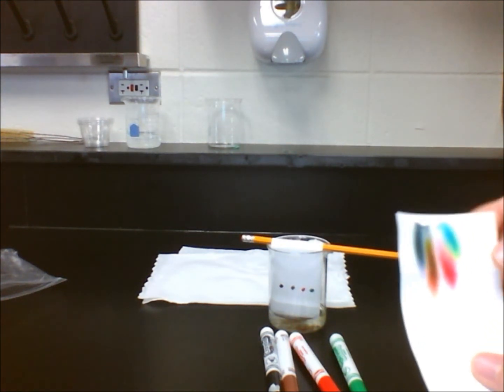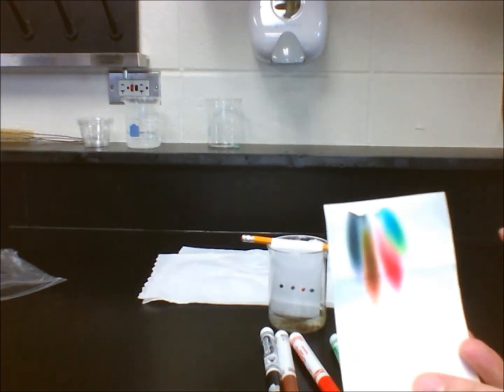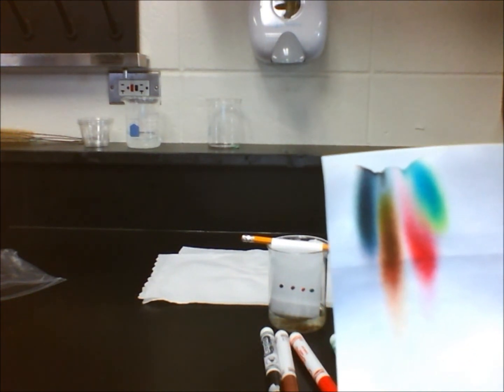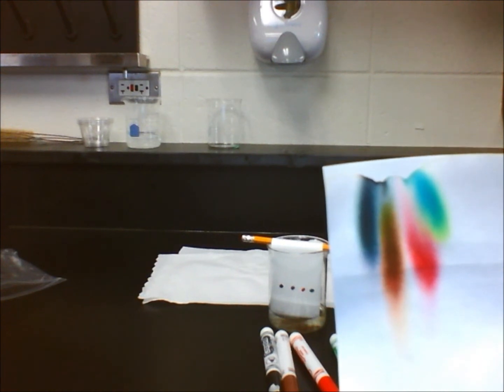The brown ink is composed of several different solutes. You can see purple, yellow, and red being separated on the chromatogram. Like in lab 17.1, you can also see that the green ink is composed of a yellow solute and blue solute.